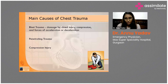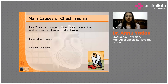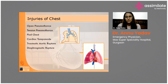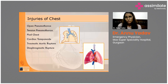There can also be direct injury by penetrating trauma — stab injuries — or a compression injury where something falls directly on the chest. Life-threatening injuries include open pneumothorax, tension pneumothorax, flail chest, cardiac tamponade, traumatic aortic rupture, and diaphragmatic rupture. We will deal with all these injuries one by one.